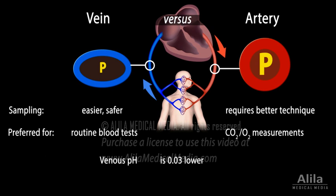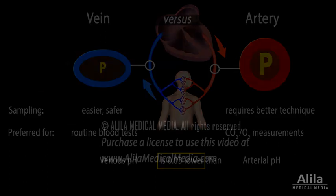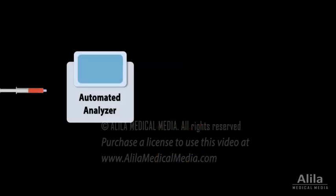Venous pH is slightly lower than arterial pH, but the two values often correlate well. Arterial blood samples must be placed on ice and analyzed immediately to avoid errors. Typically, automated blood gas analyzers are used and results are delivered within 15 minutes.